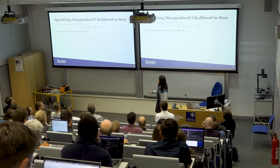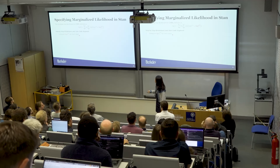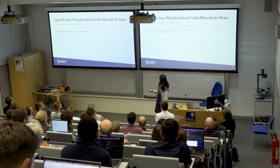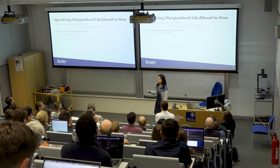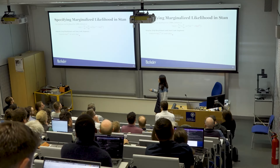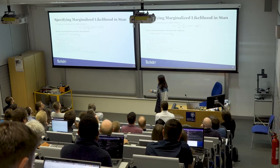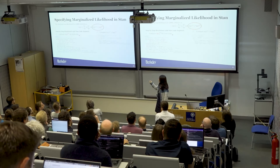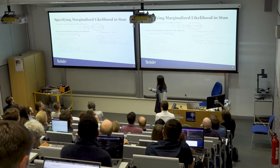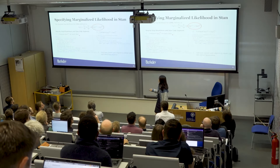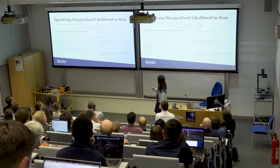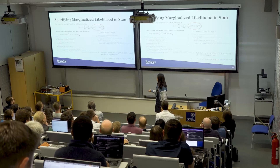A step-by-step breakdown of the Stan code illustrates how to specify this marginal likelihood. First, we compute the log l_jk using a user-defined function block, then calculate this part using the defined function block, and finally sum over classes and subjects to obtain the log likelihood and add it to the log posterior.